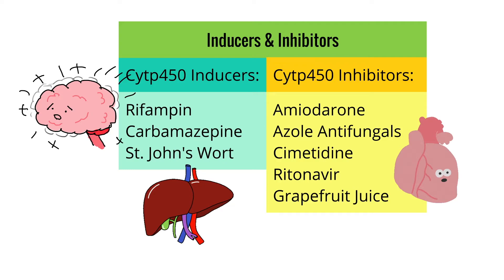The medications that inhibit CYP450 activity include amiodarone, azole antifungals, cimetidine, ritonavir, and grapefruit juice. In our question, our patient is on warfarin and has been started on amiodarone. Given that amiodarone is a CYP450 inhibitor, this results in decreased metabolism of warfarin, creating greater bioavailability of the drug. The greater the bioavailability, the higher the INR will be, and this could place the patient at increased risk of bleeding.